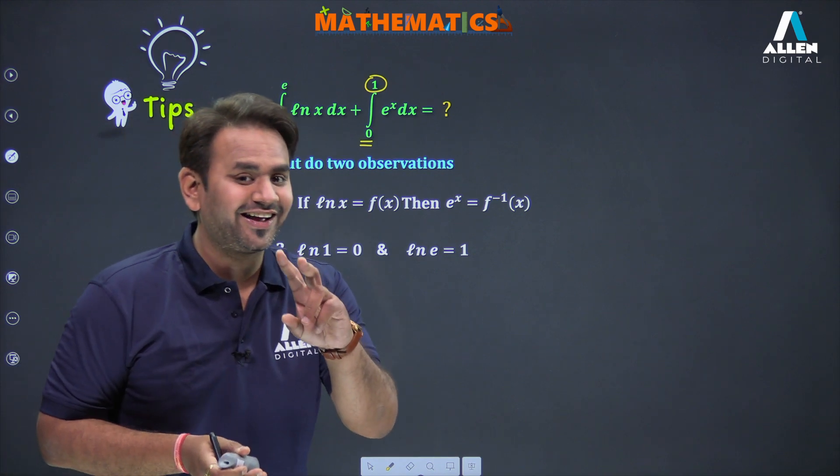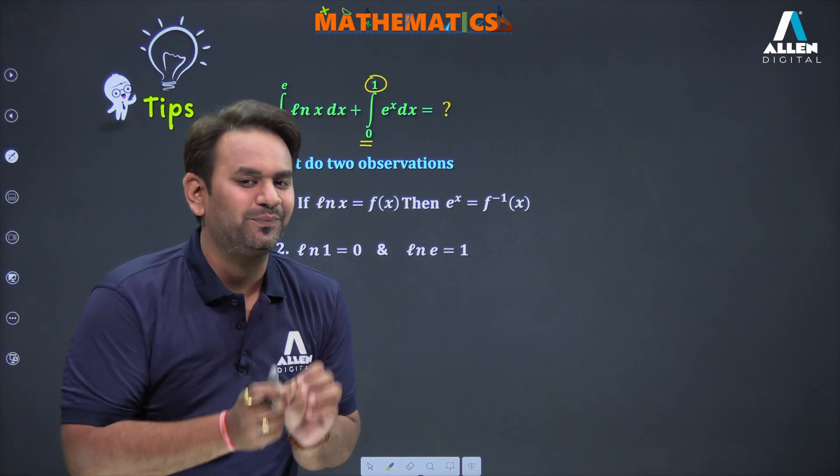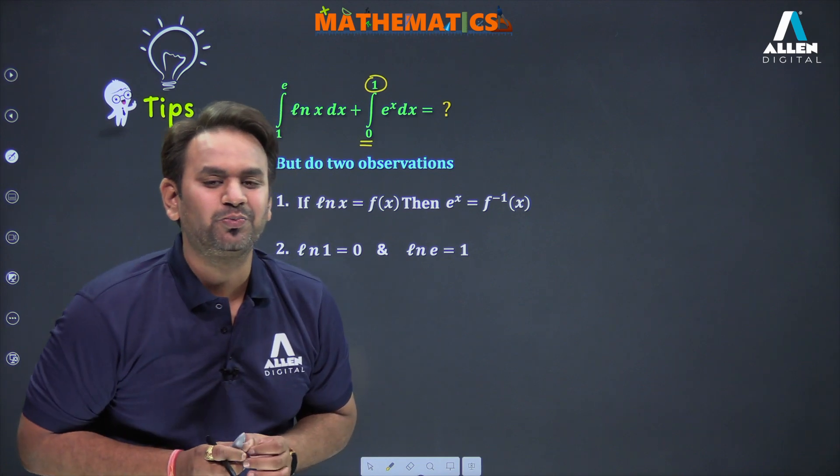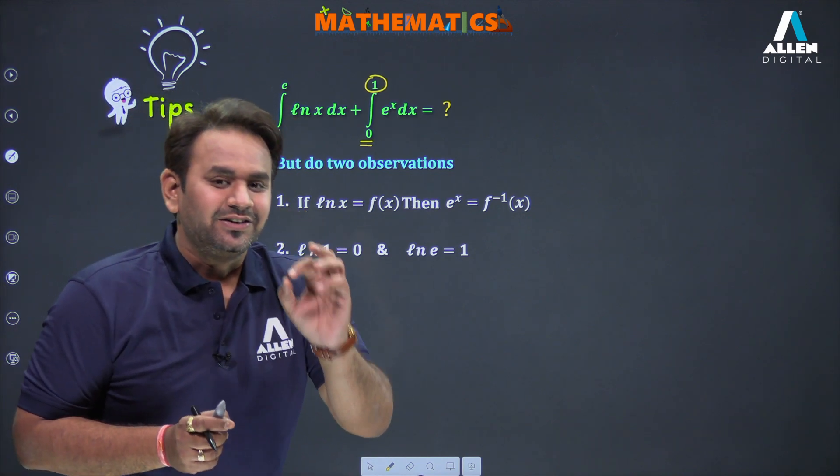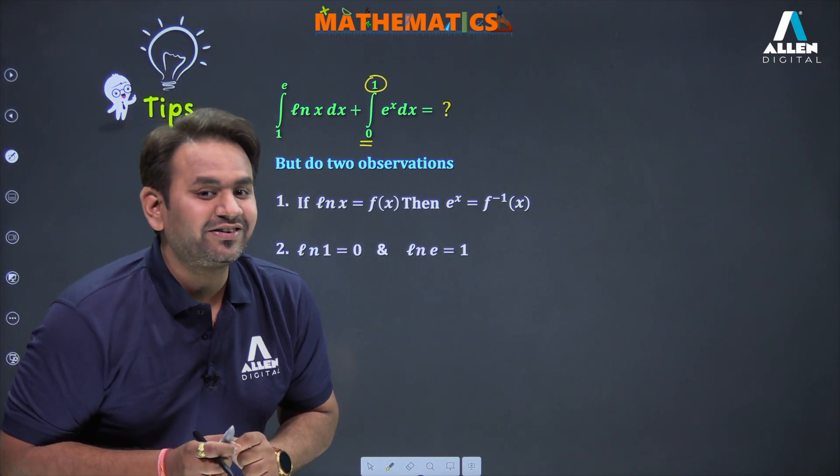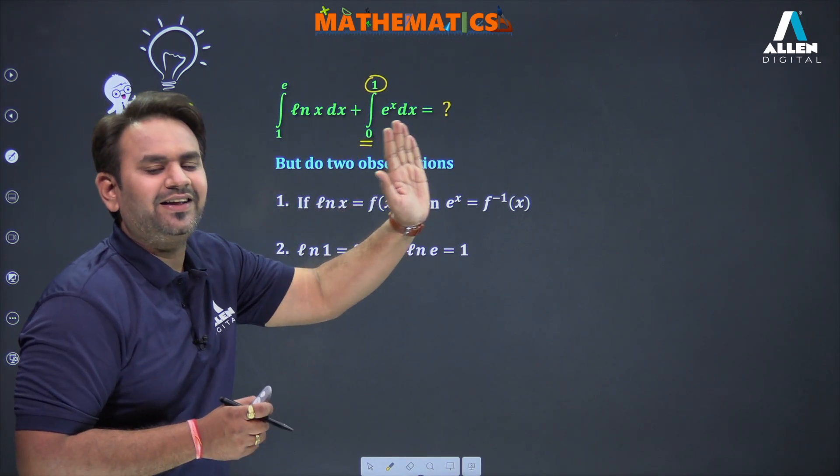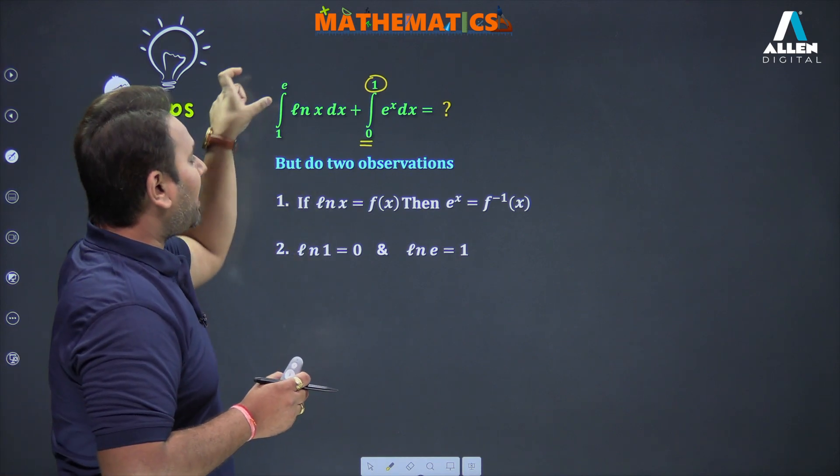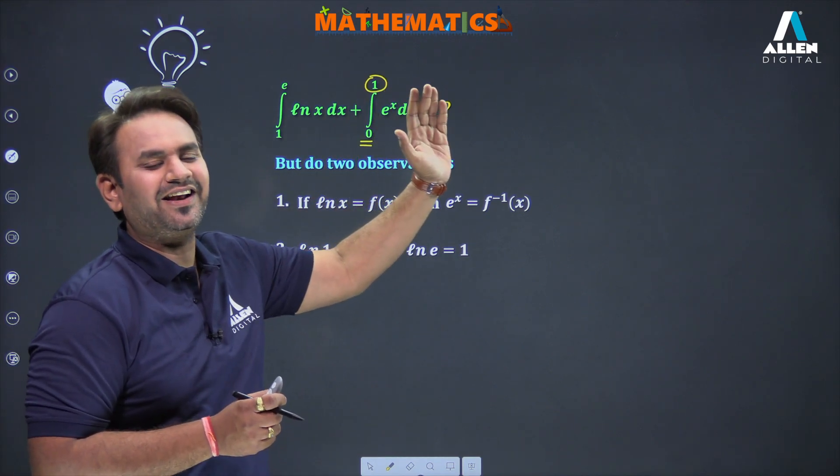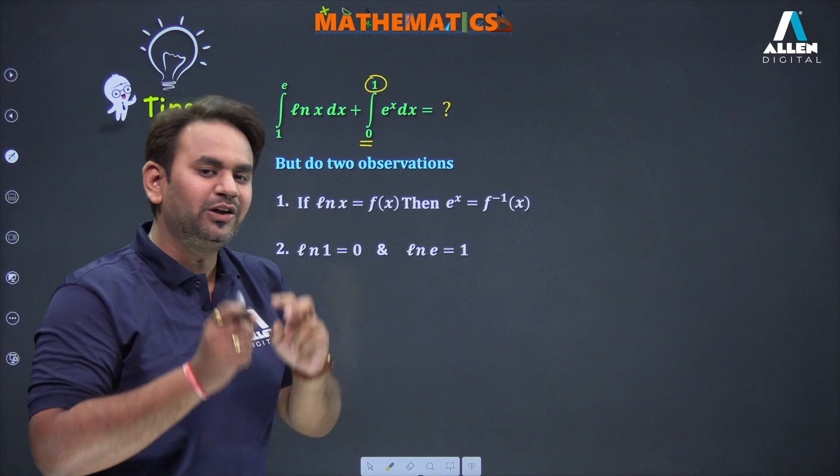So the two observations are: first observation is that if I take ln x as f(x), then the second function in I₂ is f inverse x. Second observation is that if I substitute the lower limit in ln x, I get the lower limit of the second integral, and if I substitute the upper limit, I get the upper limit of the second integral.